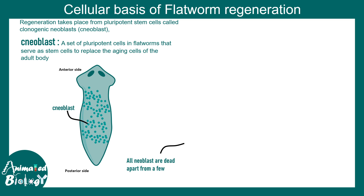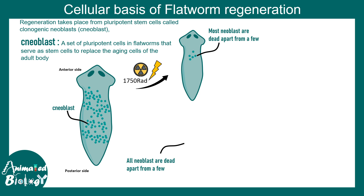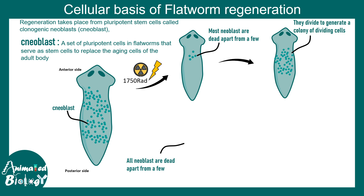It turns out that in flatworms there are different types of stem cells known as cneoblasts. These stem cells can give rise to different cell types in the body — for example, replenishing cells during aging. In an experiment where these cell types were severely depleted using radiation and only very few remained, those cells eventually divided and formed a colony of dividing neoblasts.